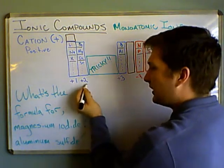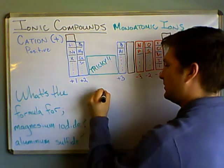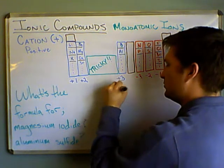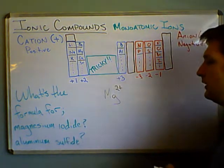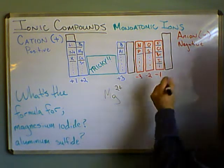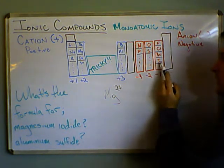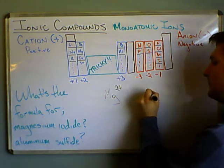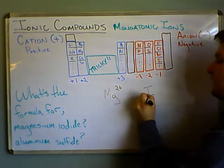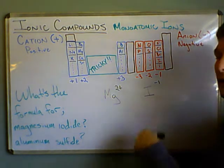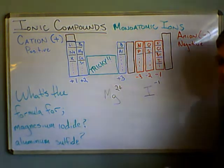And we know almost always it's going to have a charge of 2+. So I'm going to go ahead and write Mg 2+. Now iodide as an ion, it comes from here where iodine is. And these guys like to have a charge of minus 1. So I write the symbol for iodine and I write minus 1, or 1 minus, or just minus. You'll see it a lot of different ways.